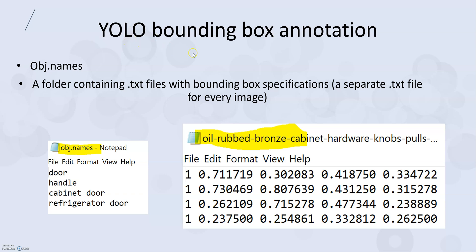The YOLO format uses a file called object.names — a text file that has all the different categories in the dataset. Then for each image, there is a text file that defines the bounding boxes in that particular image. For example, an image might have four labeled objects with a bounding box for each. The first number is the category — so for example, category one in this case would be 'door', meaning these are four different labels for four different doors. That's the YOLO bounding box.